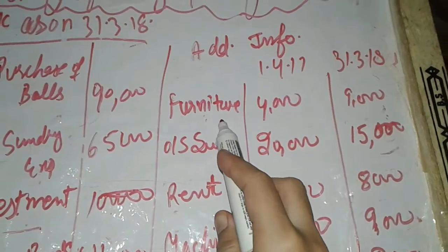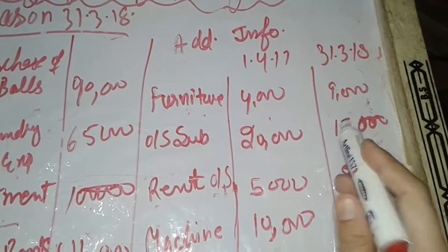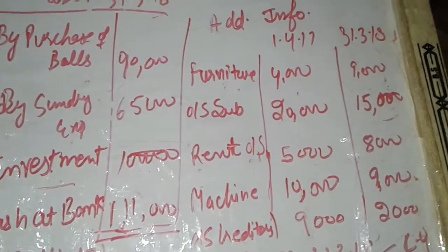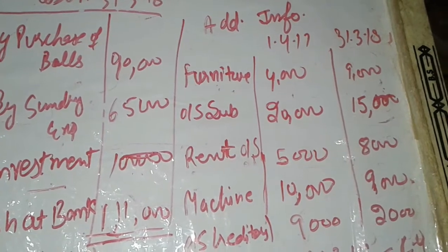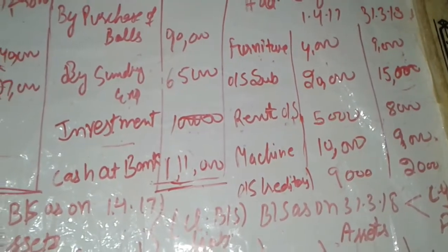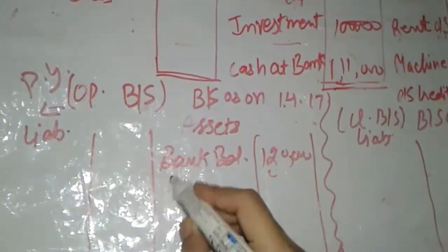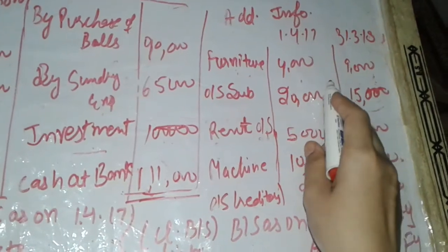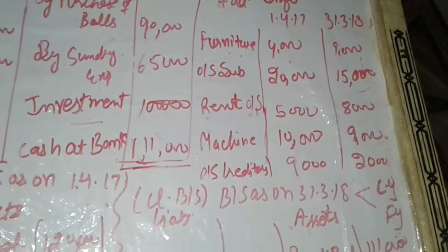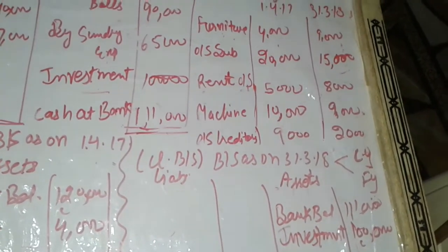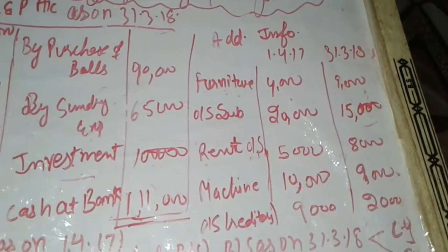Looking at additional information: furniture has an opening balance of Rs. 4,000 and a closing balance of Rs. 9,000. The opening balance of Rs. 4,000 is linked with the previous year (2017) and is posted on the asset side of the opening balance sheet. The closing balance of furniture, Rs. 9,000, belongs to the current year (2018) and is therefore posted on the asset side of the closing balance sheet.